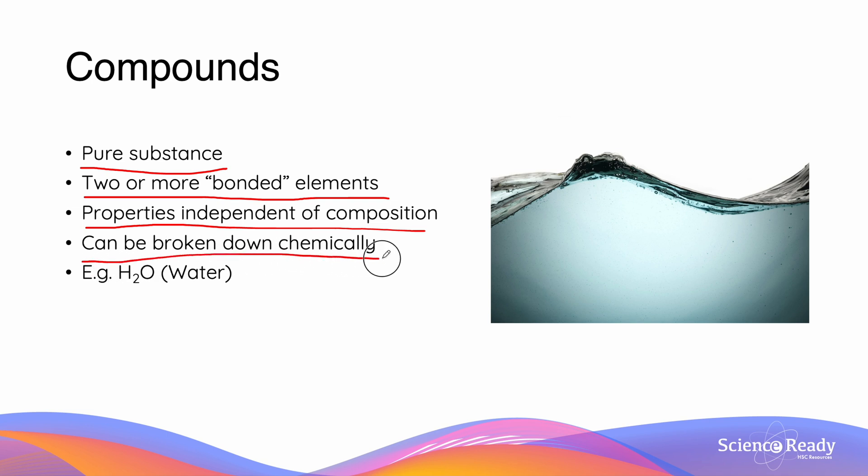An example of a chemical means of breaking things down is something called electrolysis. That being said, the compounds cannot be separated through physical separation techniques. Now notice the formula of H2O, water, indicates that the particle contains two hydrogen atoms and one oxygen atom per unit or per particle.